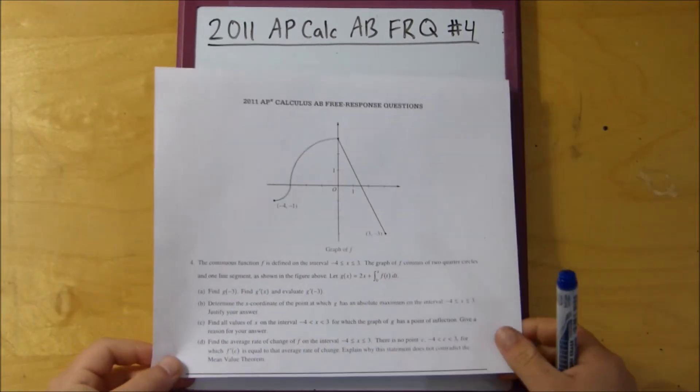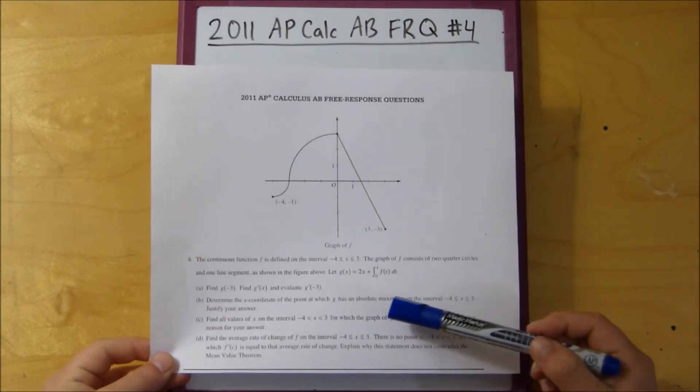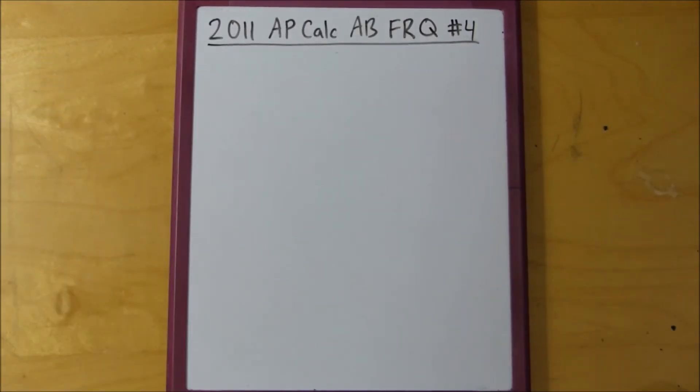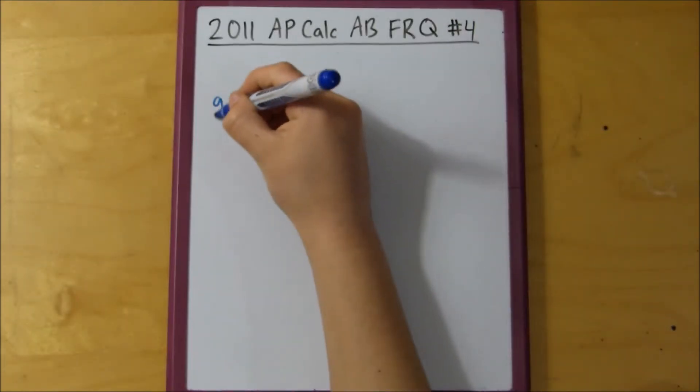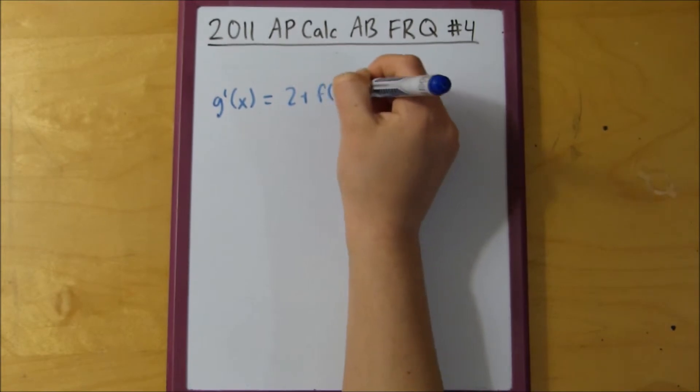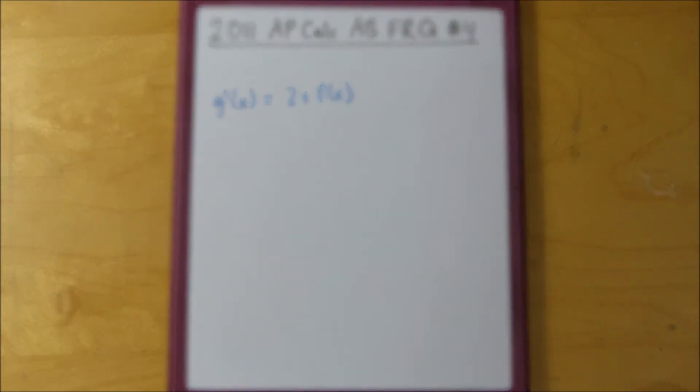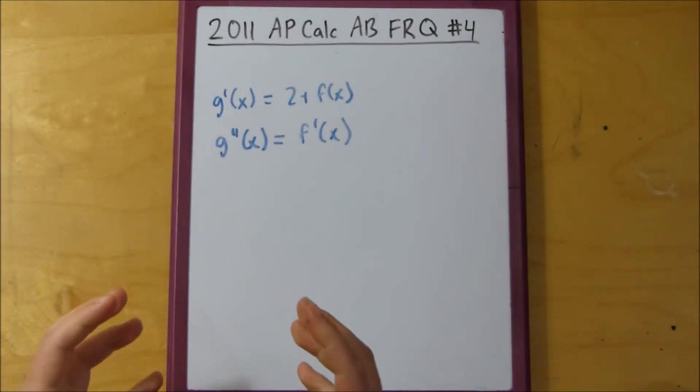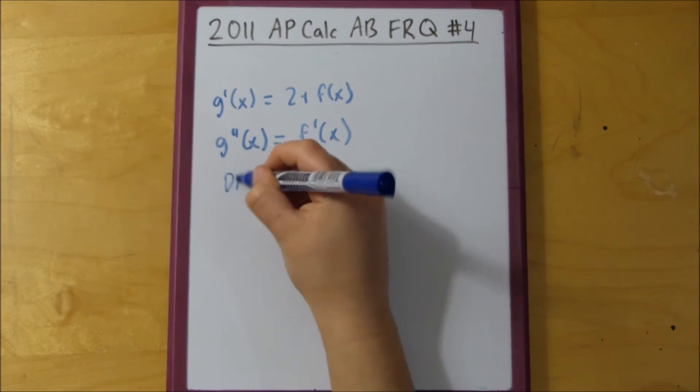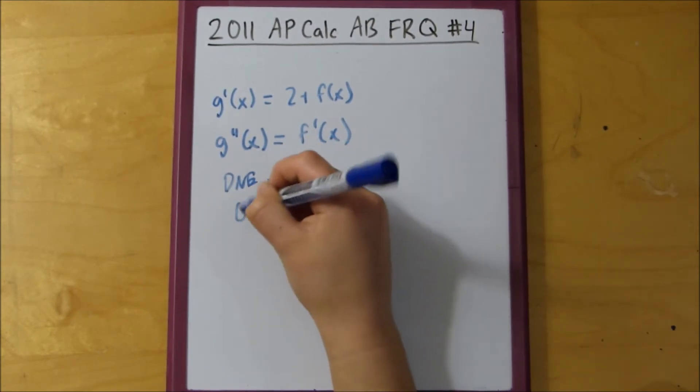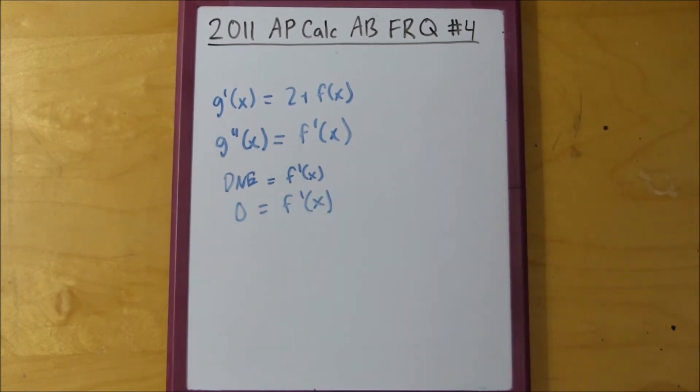Alright, and then part c asks us to find all the values where g has a point of inflection. So, what we're going to have to do is we're going to take the derivative of g, 2 plus f of x, and then we're going to take the derivative of that to get the second derivative, which is what you use to find points of inflection. So, anytime you see the word point of inflection, you're going to want to use the second derivative. Anytime you see max or min, that's first derivative. Okay, then, we're going to set this equal to 0, or actually, in this situation, where this does not exist, or when it equals 0.